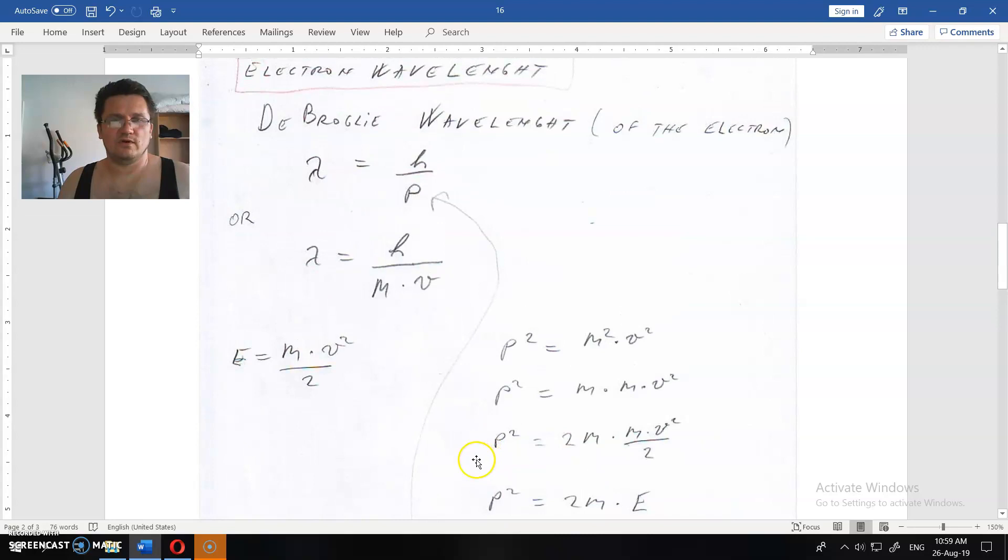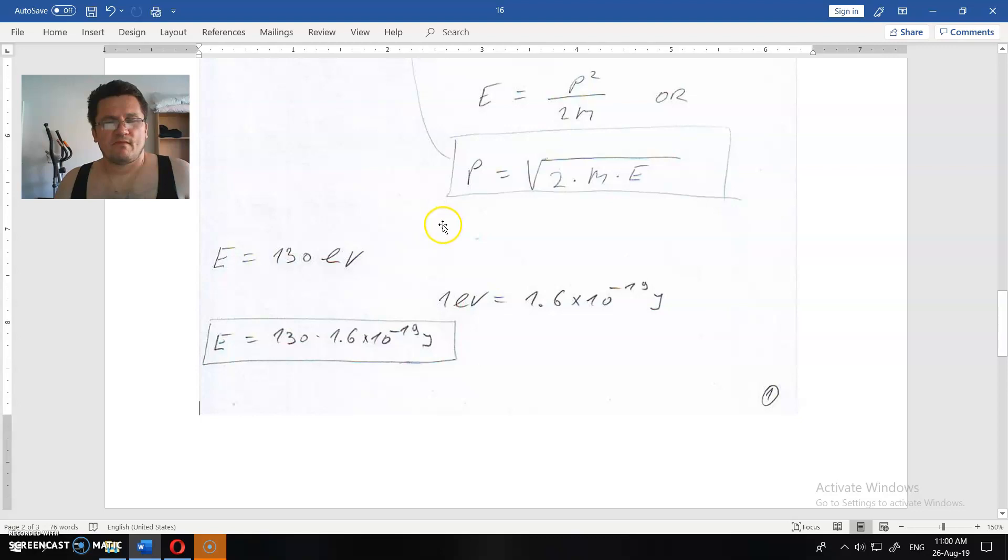So we will rewrite that in this equation. And before we do that, let us calculate how much joules is 130 eV. 1 eV is 1.6×10⁻¹⁹ joules. Note that this is the same amount as elementary charge, but about that some other times.